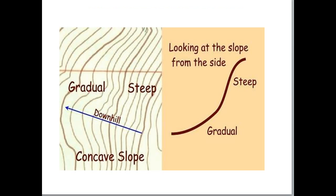Sometimes you can look at the shape of a slope from contours: where lines are closer together it's steep, and at the top of that slope they spread out, indicating a more gradual incline.